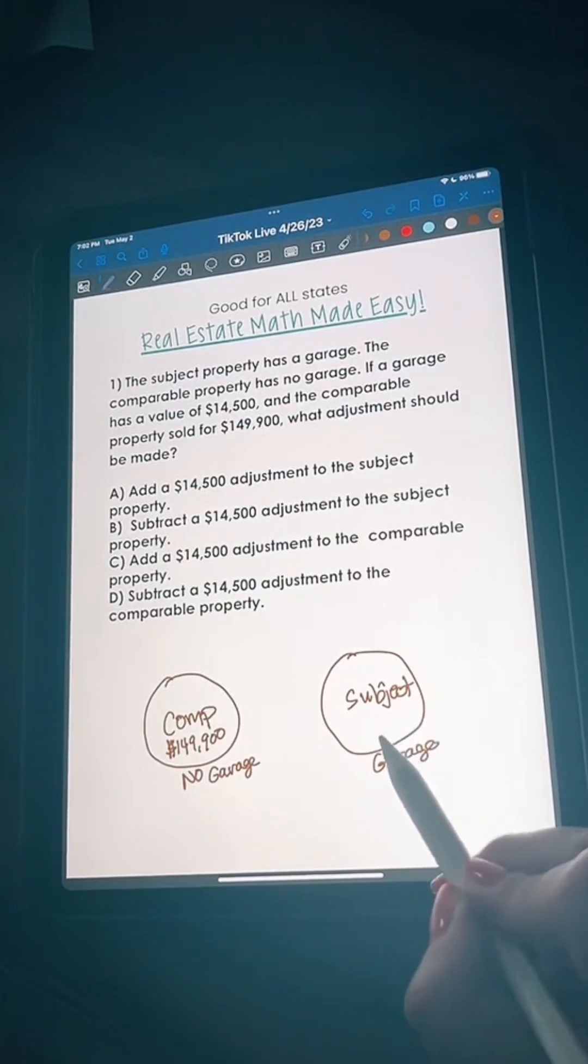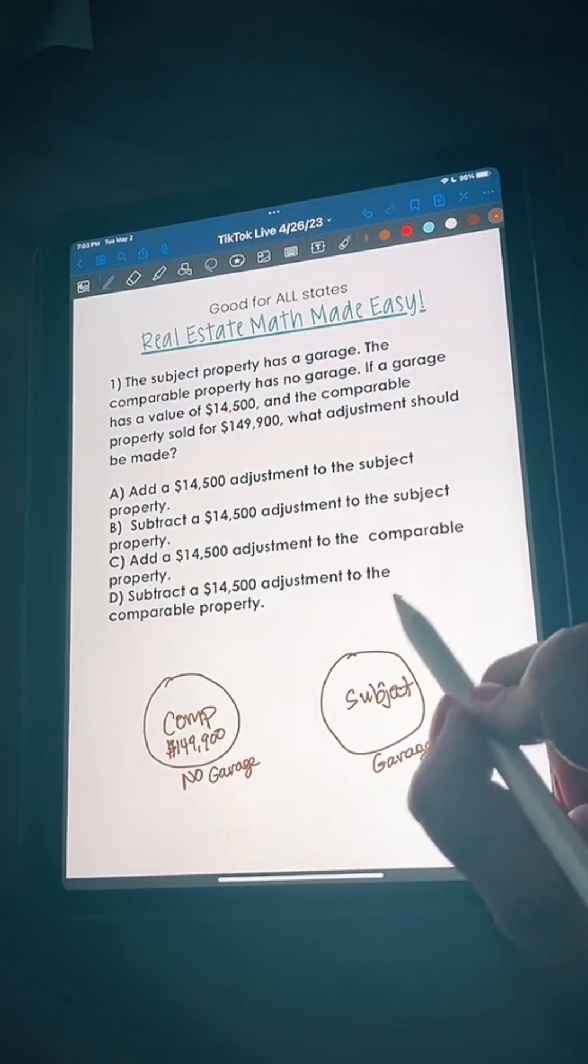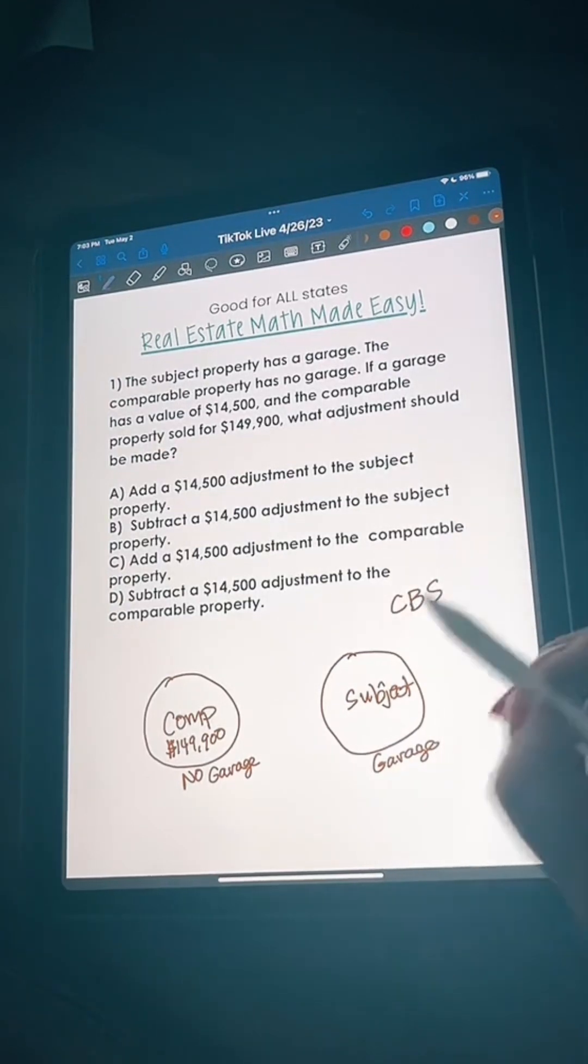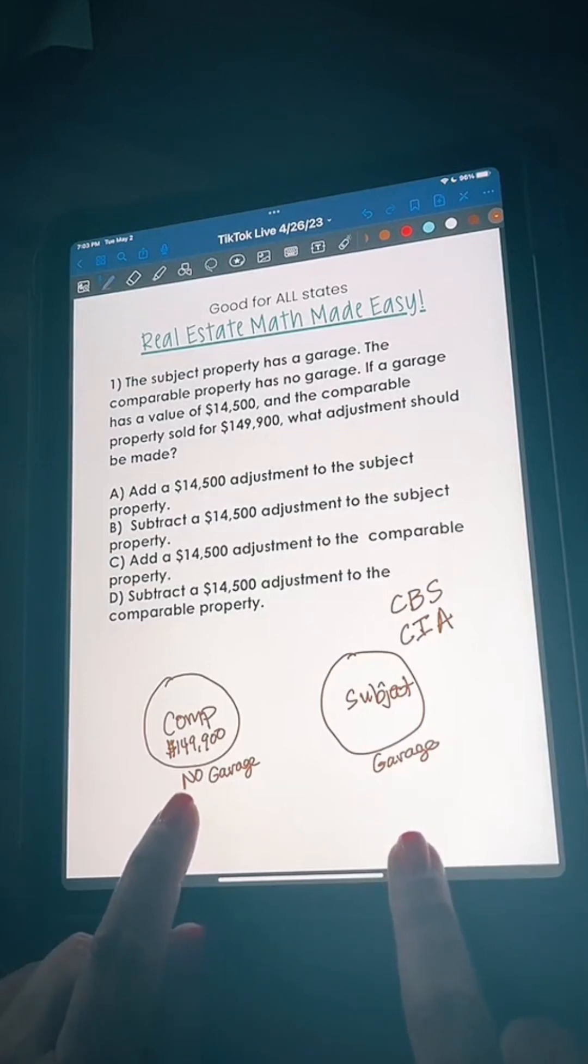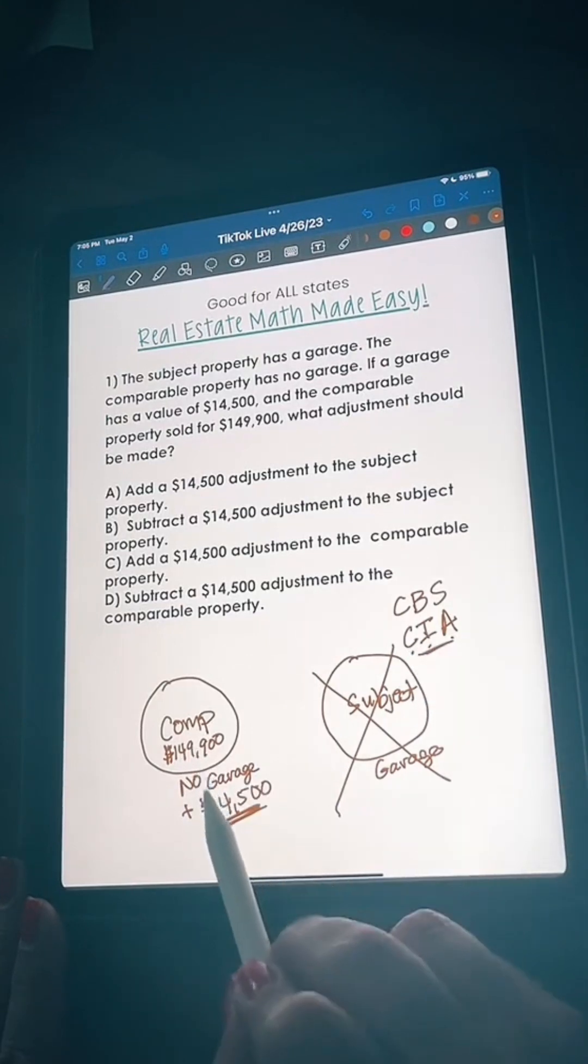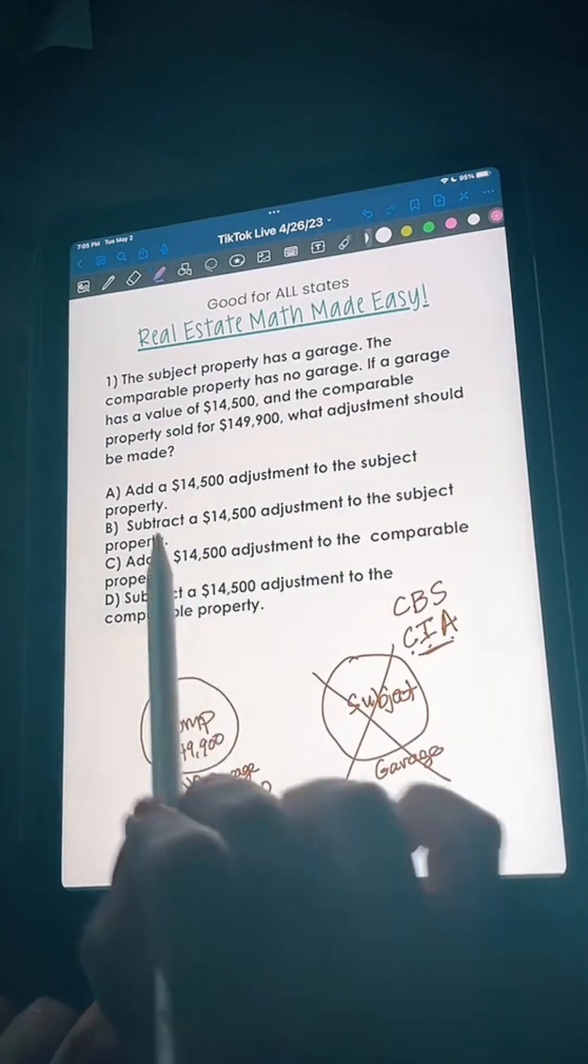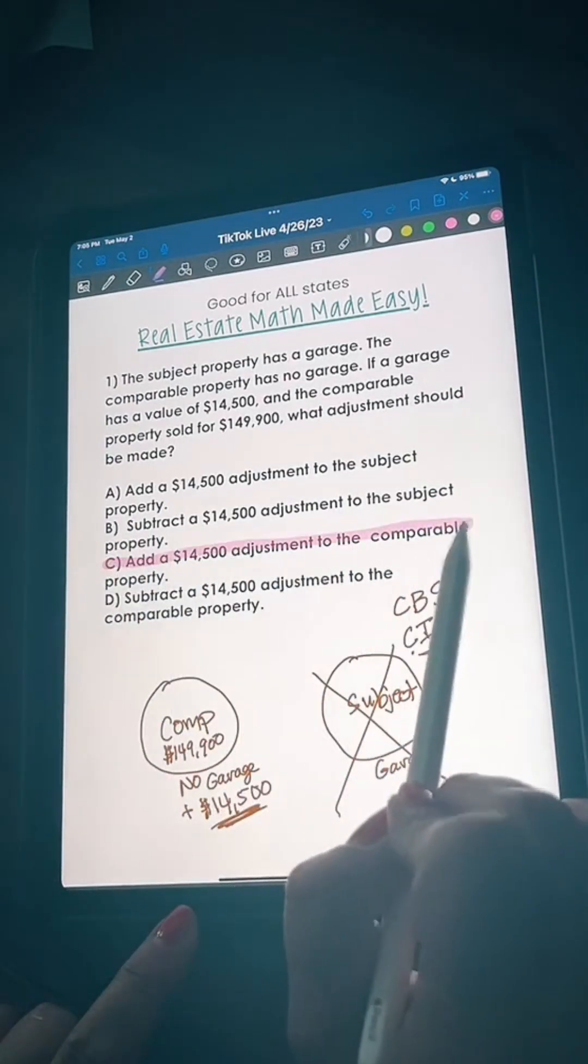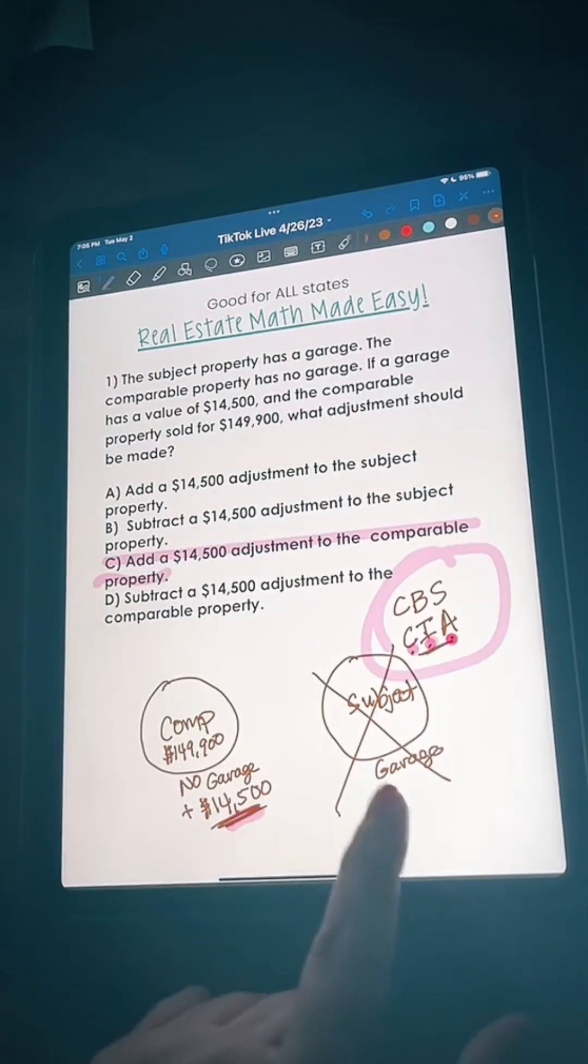So this one's better, it has more stuff. Remember when comparable is better we subtract. If comparable is inferior we add. CBS CIA - comparable is better subtract, comparable is inferior we add. In this example the comparable is inferior because it doesn't have a garage and this one has a garage. We're going to add because comparable is inferior, we're adding to the comparable. The answer is C.